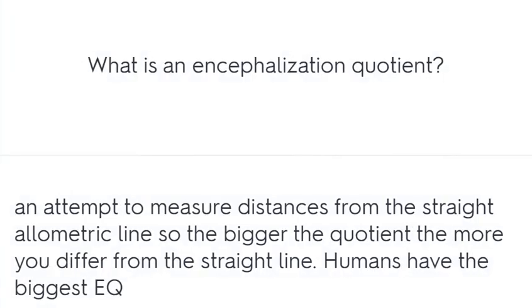What is an encephalization quotient? An attempt to measure distances from the straight allometric line, so the bigger the quotient, the more you differ from the straight line. Humans have the biggest EQ.